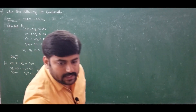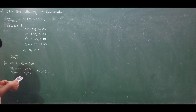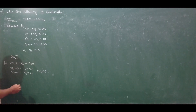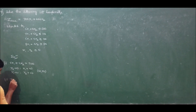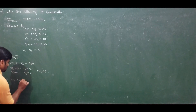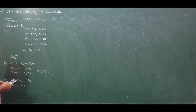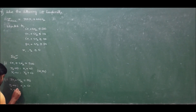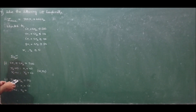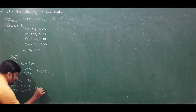Let me use a calculator to avoid mistakes. 200 divided by 5 is 40; 200 divided by 4 is 50. Moving to the second constraint: 3x1 plus 5x2 equals 150. Setting x2 to 0, the value of x1 is 150 divided by 5, that is 50. Setting x1 to 0, x2 equals 30. So the coordinates of the second constraint are (50, 30).